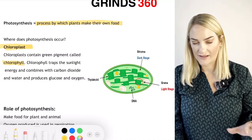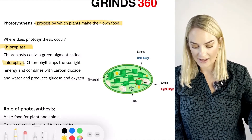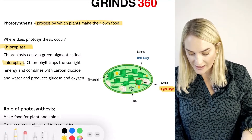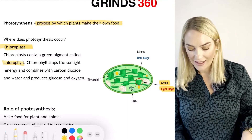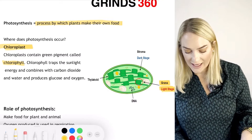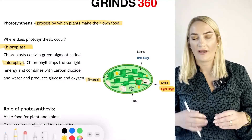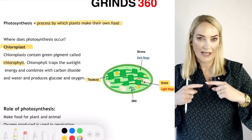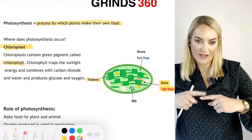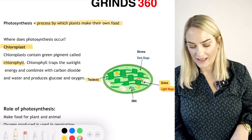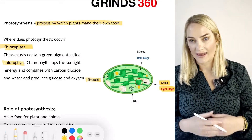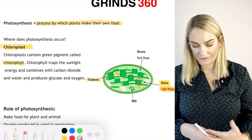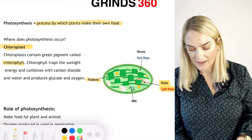There are two stages of photosynthesis: the light stage and the dark stage. The light stage takes place in the grana. A thylakoid is like a coin, and a stack of coins is your grana — that's where the light stage takes place. It requires light.